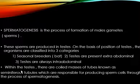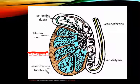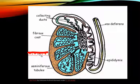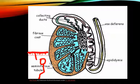Now in the next slide, hum seminiferous tubules ke structure dekhenge. Yeh humare testes hain, aur yeh jo tubular structure yahaan par present hai, inhe hum seminiferous tubules kehte hain. Ab yeh jo seminiferous tubules hain, yeh lined up hoti hain epithelial cells se — yani ki yahaan par ek layer present hoti hai germinal epithelial cells ki. Inhi cells ki further differentiation hokar hamare sperms ki formation hoti hai.